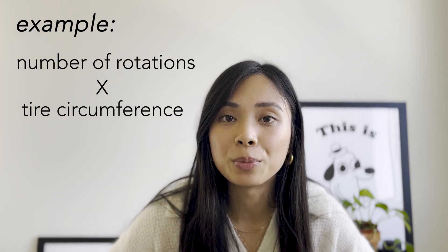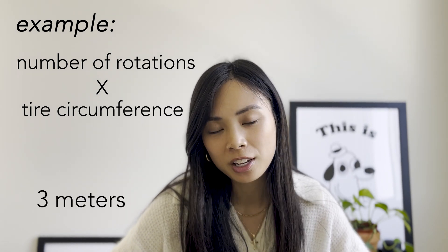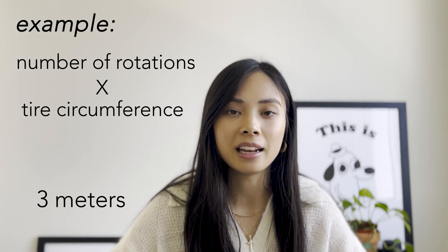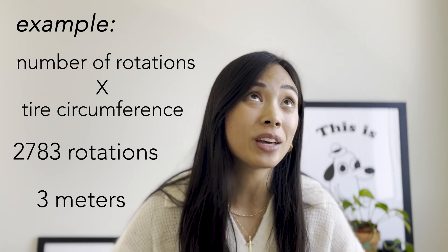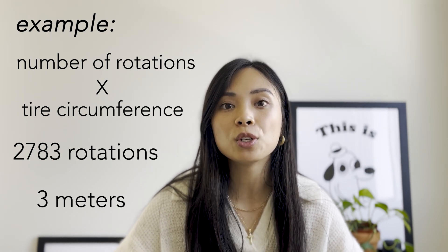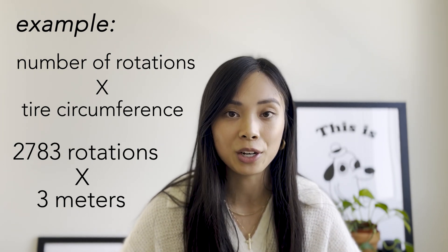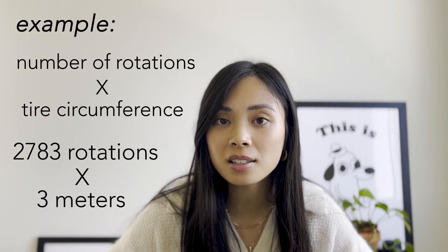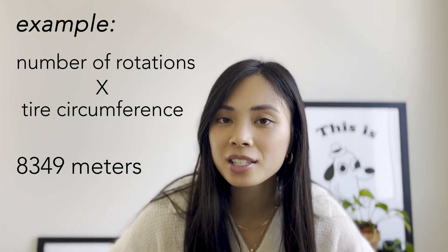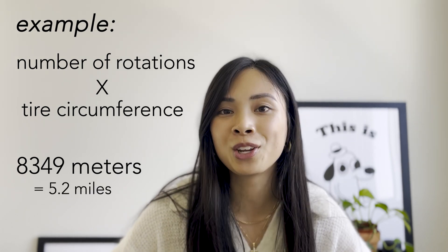Let's do another example with numbers using the same tire circumference of three meters. Let's say the tire has rotated a total of 2,783 rotations in its lifetime. All we do is multiply those two numbers together: three meters times 2,783 rotations gives us a total distance of 8,349 meters. Converting that into miles, that would be about 5.2 miles.